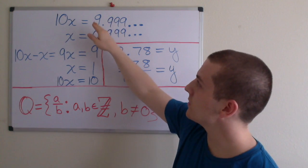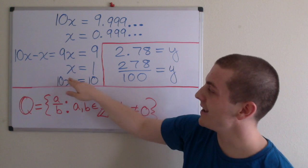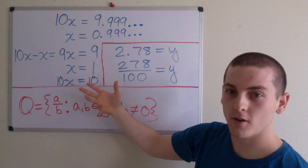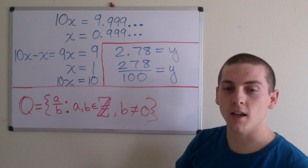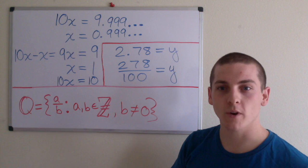And these are in fact true: 9.99 repeating equals 10. So we can now express 10x as an integer, which is a rational number. We can put 10 divided by 1, which is a ratio.